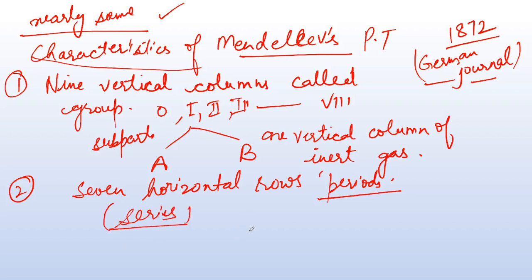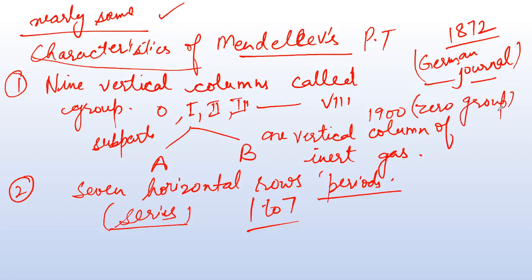Mendeleev's periodic table had periods numbered 1 to 7. In 1900, a new group known as the Zero Group was added. This Zero Group contained all the inert gases — helium, neon, argon, krypton, and so on. There was also a series of 7 horizontal periods.